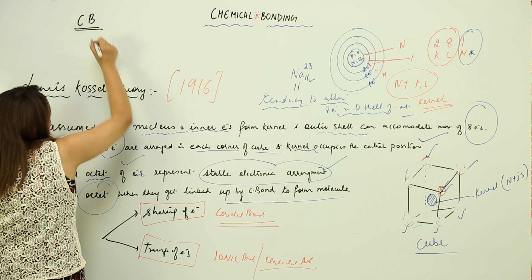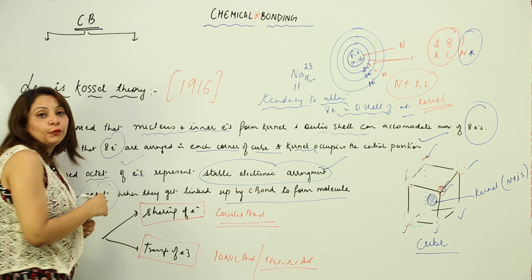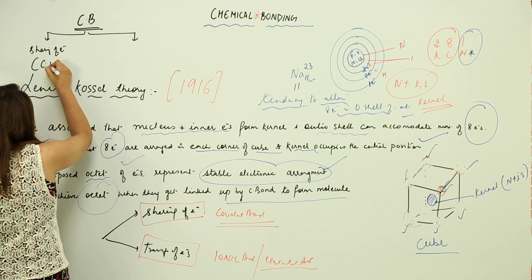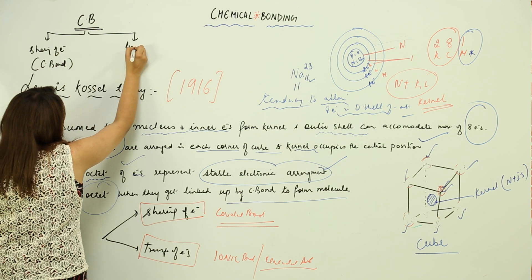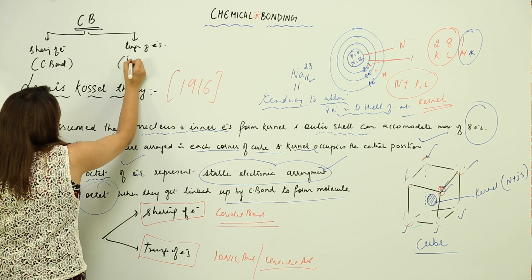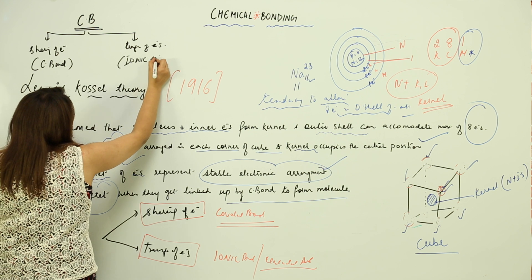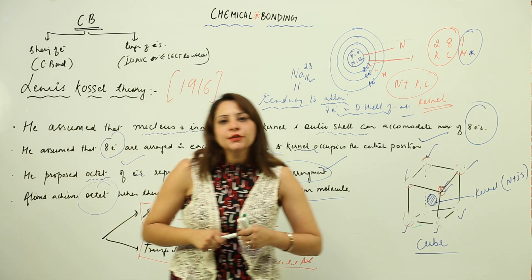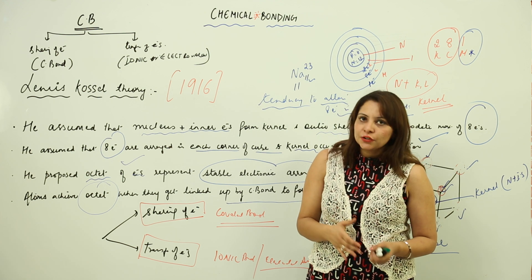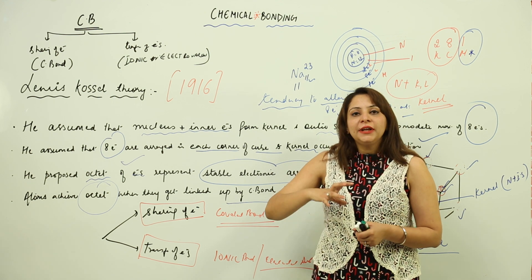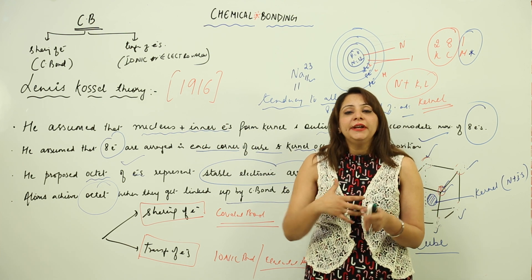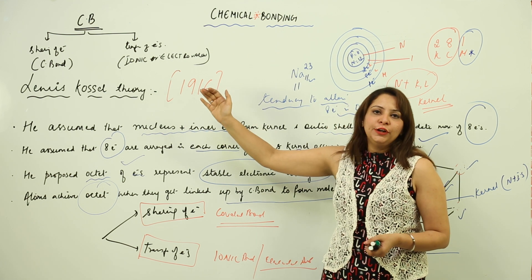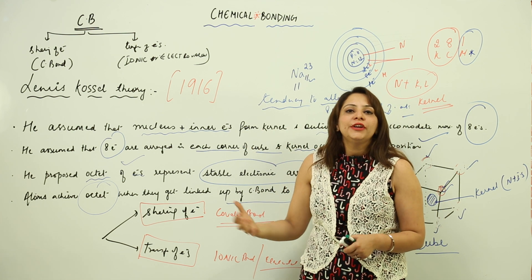According to Lewis, the reason behind the linkage is to complete the octet. Every atom is looking to complete its octet, either by sharing electrons with another atom or by transferring electrons. The bond formed by sharing is a covalent bond, and by transfer is an ionic or electrovalent bond. We will now look at how we can form a covalent bond or an ionic bond.